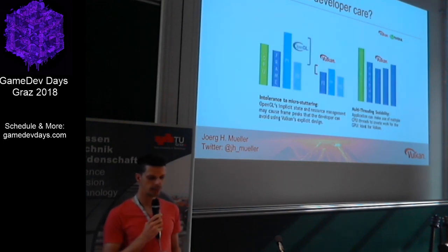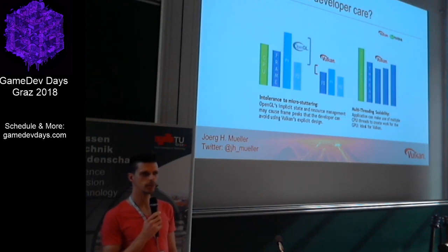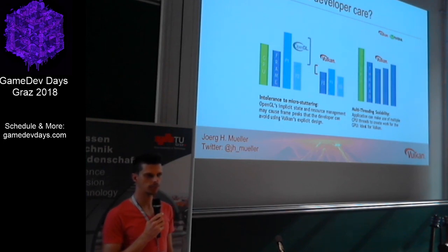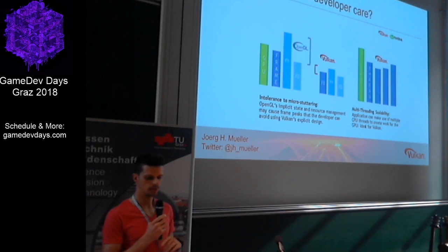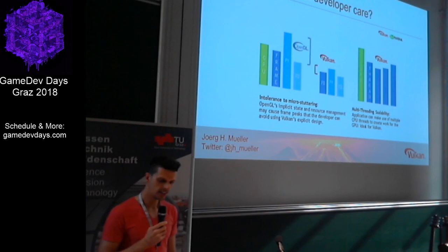OpenGL also had the problem that it was not really multi-thread capable — you had to do all the rendering on one core of the CPU. With Vulkan you can use multiple cores. The GPU itself doesn't change much; OpenGL was already quite optimized. So if you're GPU-bound you might not notice a difference, but if you're CPU-bound — if the CPU was always running at 100% and the GPU was kind of bored — then Vulkan helps you improve performance there.